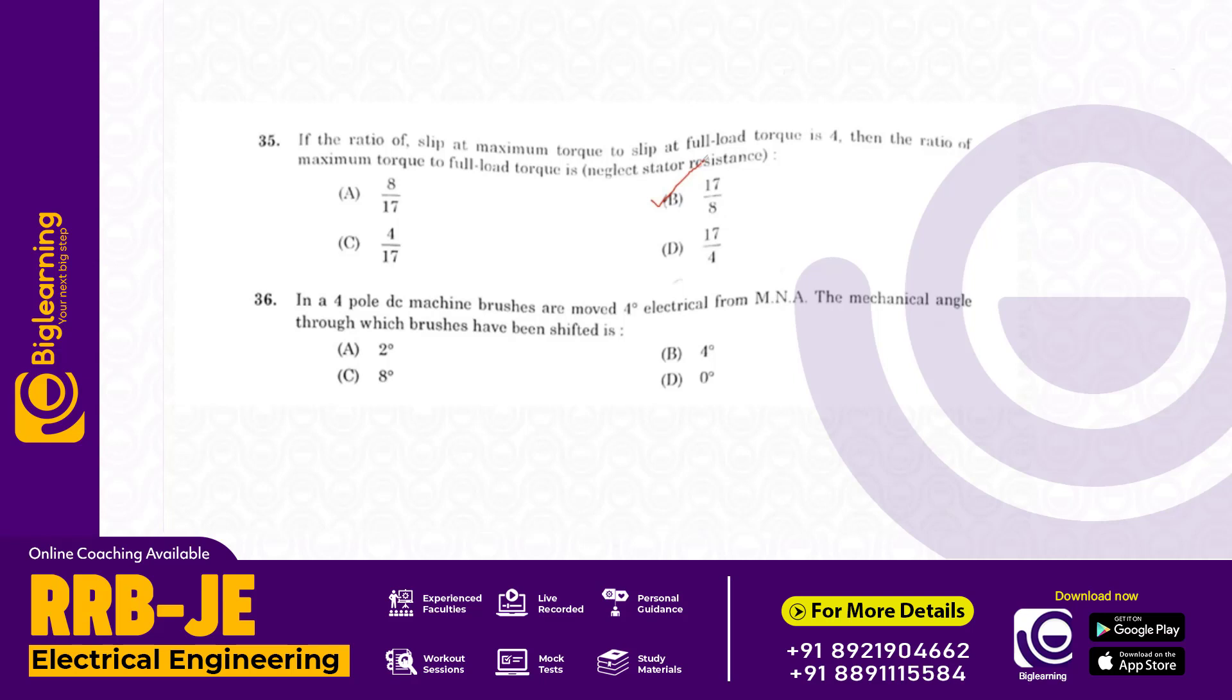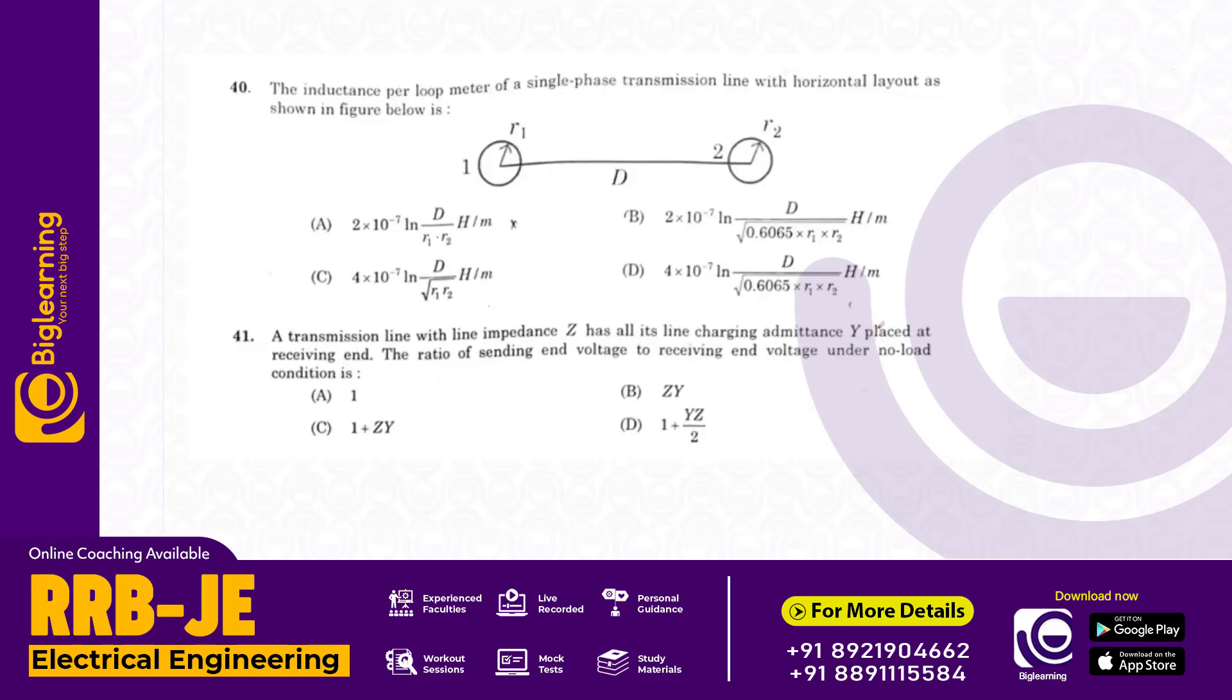In a four pole DC machine, brushes are moved four degrees electrical from MNA. Converting electrical degrees to mechanical degrees, the answer is A: two degrees.